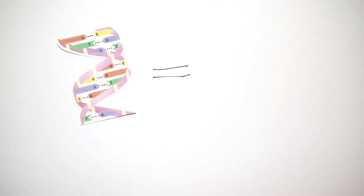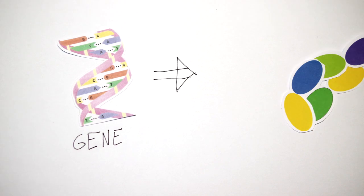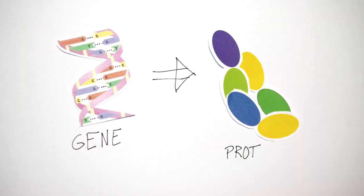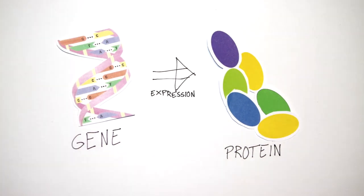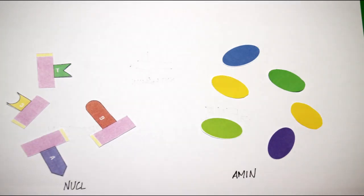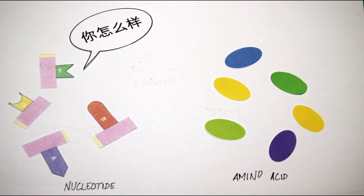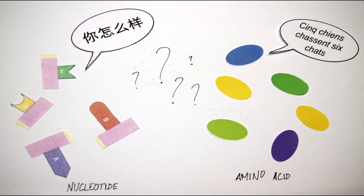Just like letters in our words, the different types of nucleotides can be rearranged to form different sequences. Some of these bits of DNA — the genes — contain the information to produce specific proteins, and when they are produced, the gene is being expressed. The basic unit of proteins is the amino acids, while in DNA it is the nucleotides. It's as if DNA spoke Chinese and proteins French — their language is not the same, not even the alphabet. So it needs to be translated.